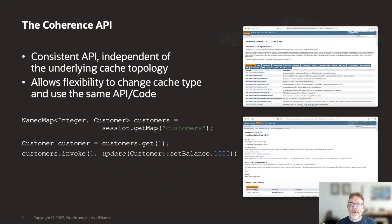One of the things I've always liked about the Coherence API is the fact that you can write code without knowing what underlying cache topology is being used. This provides flexibility in being able to change the topology without changing application code. For example, you could start using a distributed or partition cache and then decide you wish to use a near or view cache based upon your requirements — there's no change required to your code, just a configuration change. In this video, we're going to cover at a high level the main cache topologies and their general use cases.